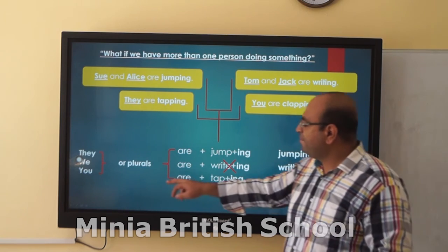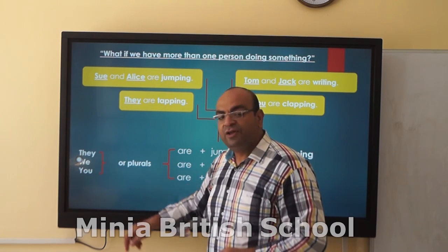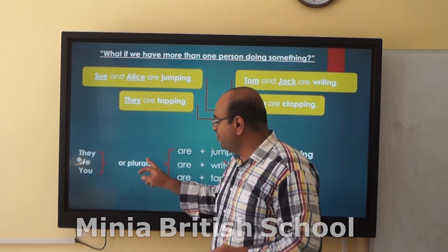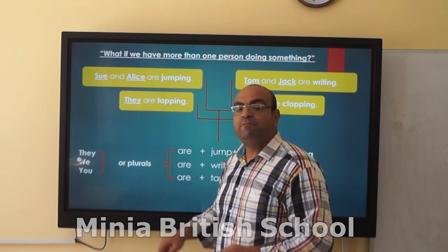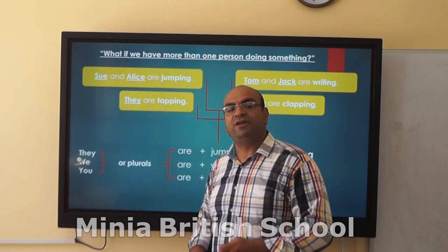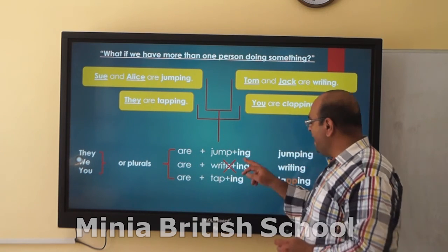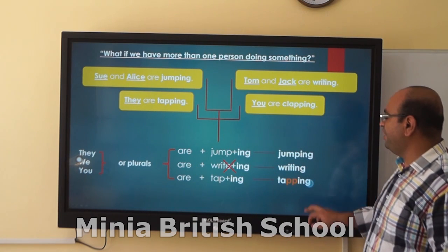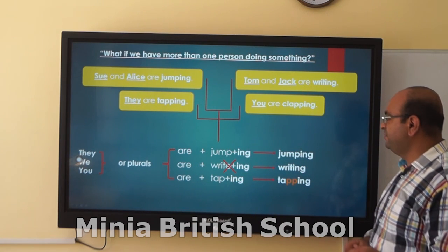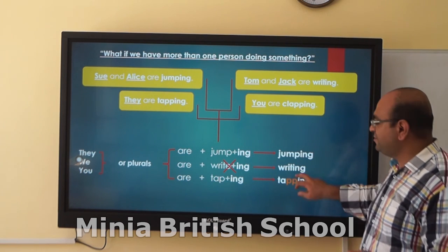So, they, we, you, or plural nouns — any plural noun — will take 'are' and the verb with -ING. That's how it is.